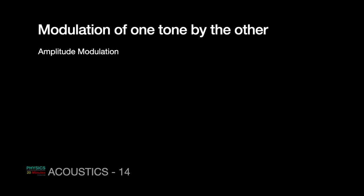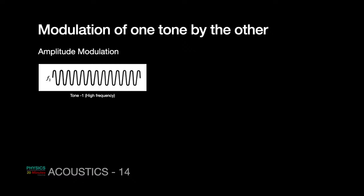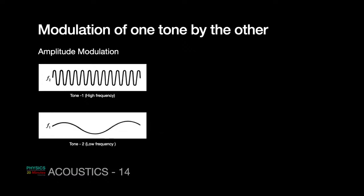In amplitude modulation, suppose I have one high frequency tone. Remember the frequency can be judged by the closeness of crests and troughs. If they are close to each other it's high frequency. If they are away from each other it's low frequency. This is tone 2 which is a low frequency. If I modulate this by the other one, I am amplitude modulating the high frequency tone by the low frequency tone. You can increase and decrease the amplitude of the high frequency tone.